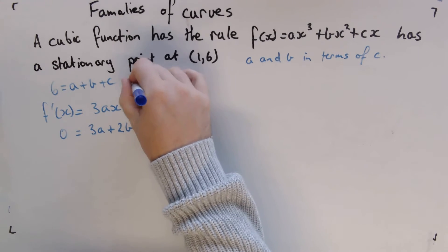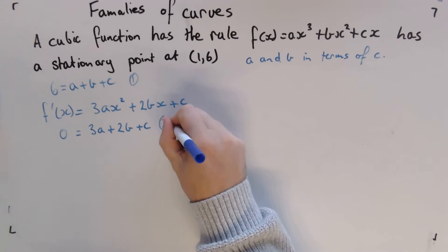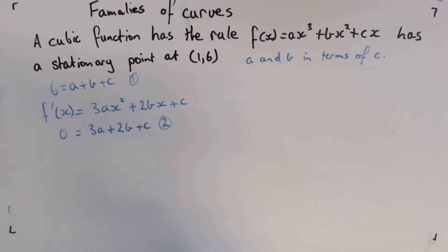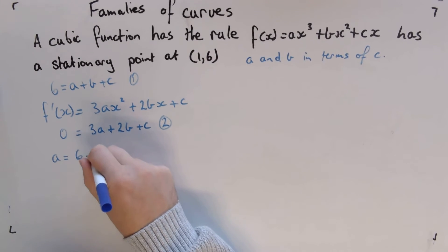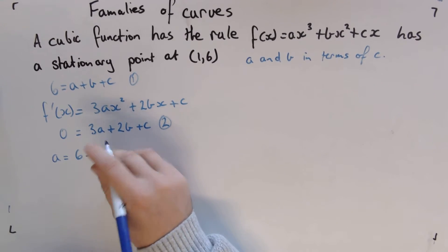So let's rearrange, say, equation 1. This is equation 2. Let's rearrange equation 1 for, say, a. So we're going to say a = 6 - b - c.